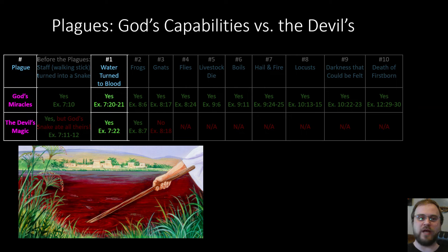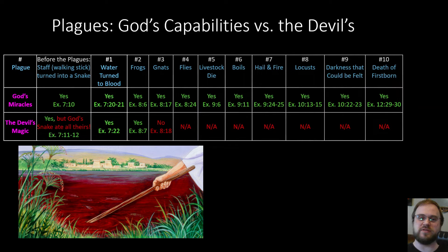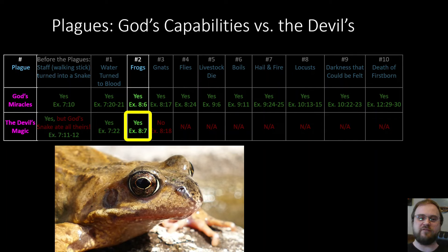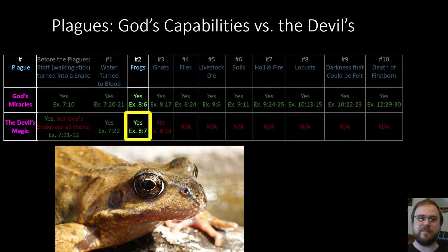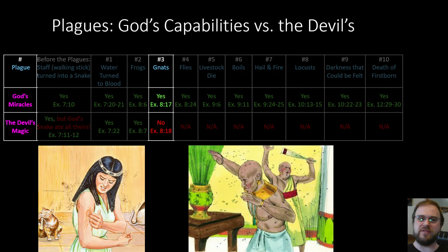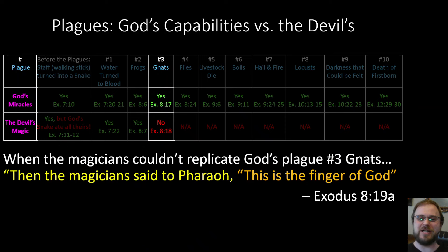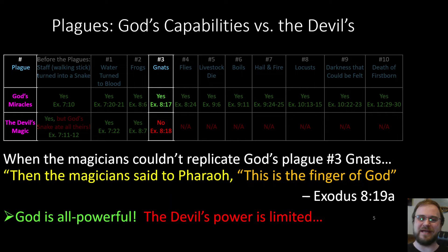In the first plague, water turned into blood — God did it, and the devil's magicians could counterfeit it too. The same with the frogs — God could do it, and the devil could counterfeit that in Exodus 8:7. But with plague number three, the gnats — or lice as the King James says — the magicians couldn't replicate it, and said to Pharaoh, 'This is the finger of God' (Exodus 8:19). It's curious what was different about the gnats, but ultimately God is all-powerful and the devil's power is limited.